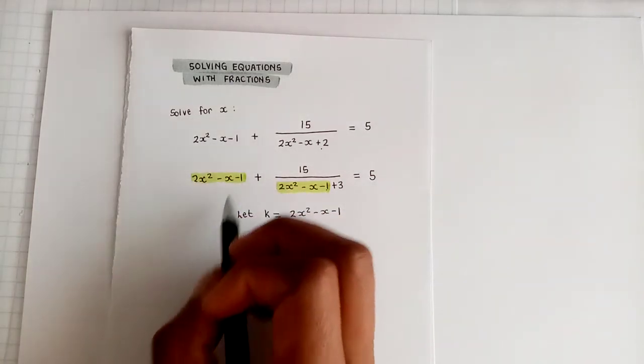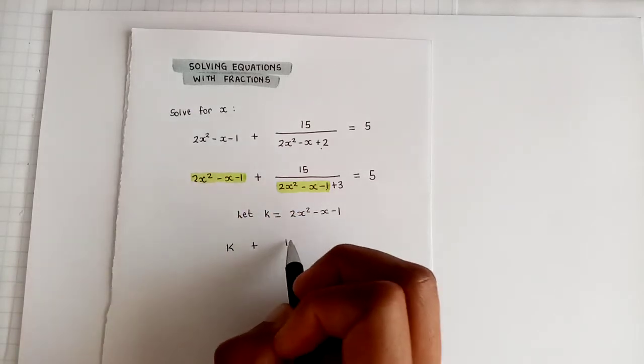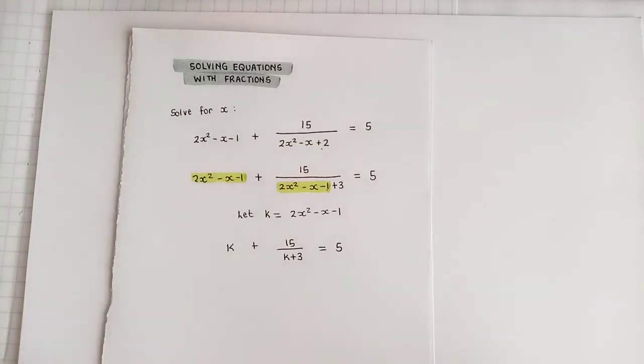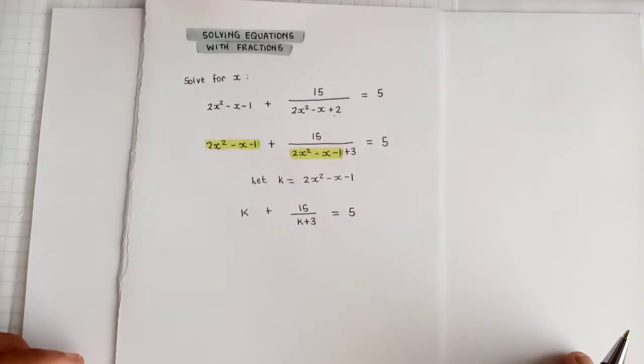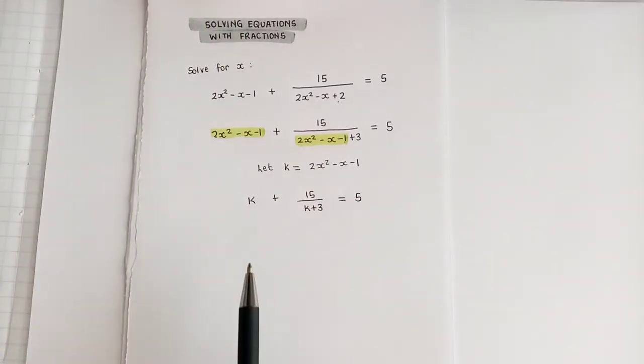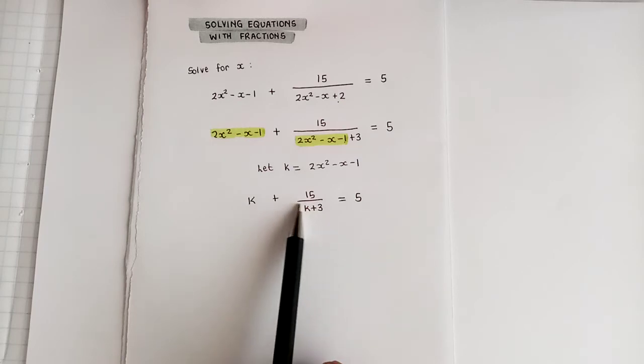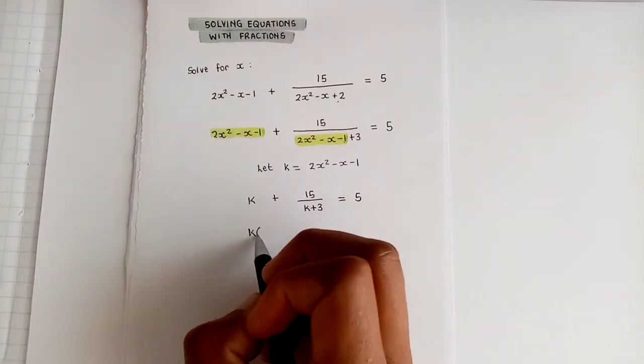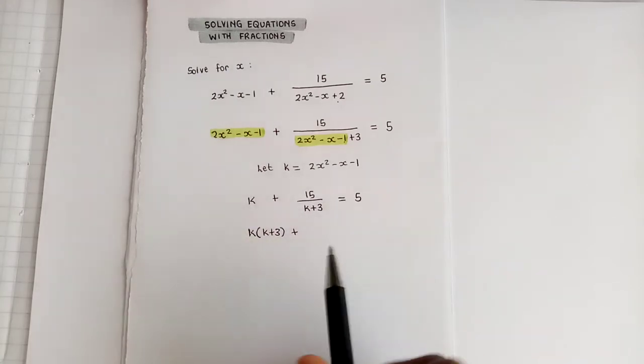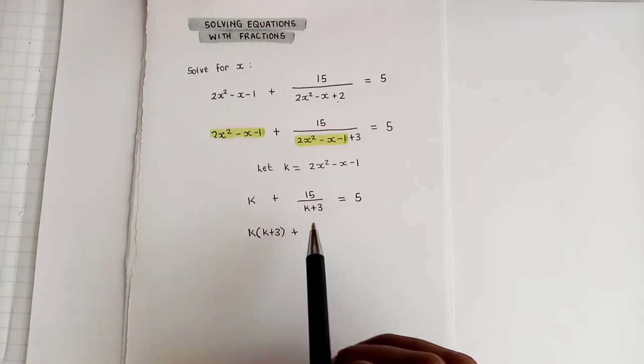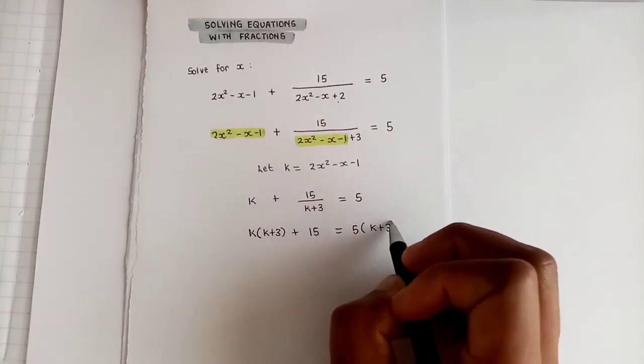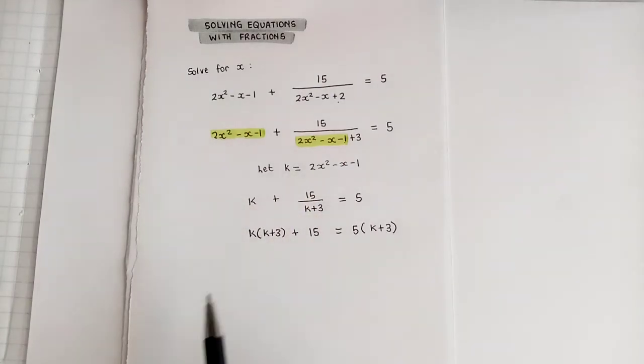So that means that now instead of having that entire quadratic, we're now going to have a k and then plus a 15 divided by k + 3, and this must equal 5. Now the objective for these questions really is to get rid of the fractions. If we can delete the fractions, then it makes the job a little bit easier. Now how do we get rid of a fraction? We're basically now going to be able to multiply throughout this entire equation by the denominator. So we're going to multiply the k with the denominator k + 3. Then when we multiply this fraction by k + 3, obviously the k + 3 will cancel, leaving you with the 15, and then this will then be 5 times k + 3. Remember to multiply each and every term by your denominator.